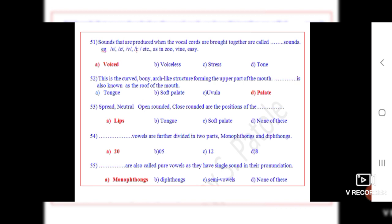Question number 54: Dot dot vowels are further divided into two parts, monophthongs and diphthongs. The correct option is A, twenty.